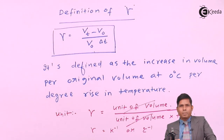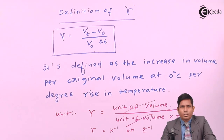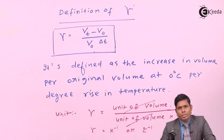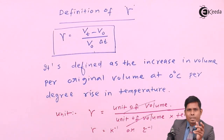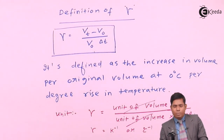All three coefficients are defined as change in dimension per original dimension per degree rise in temperature, and they share the same units. It is important to note that in these derivations we have assumed the initial length, area, or volume to be at 0 degrees centigrade — for example, the volume of the slab was V₀ at 0 degrees centigrade.